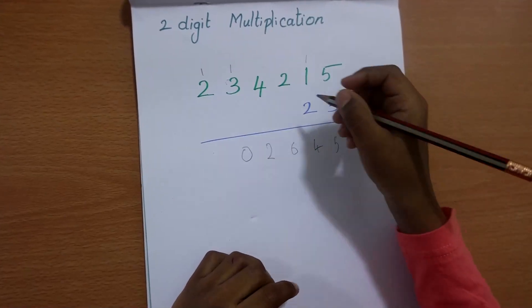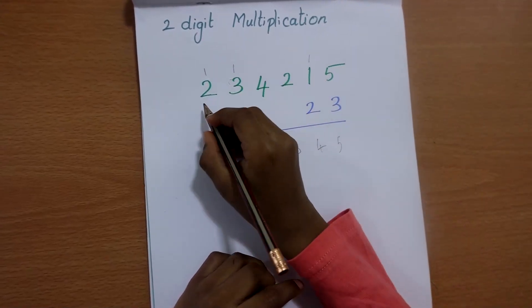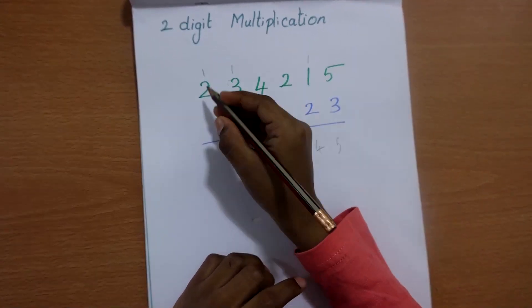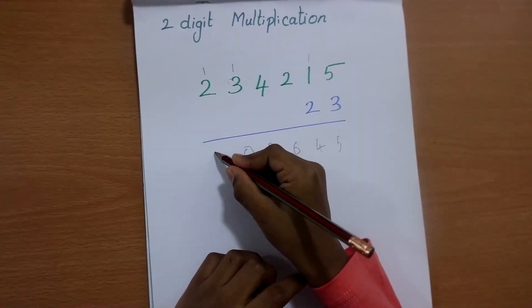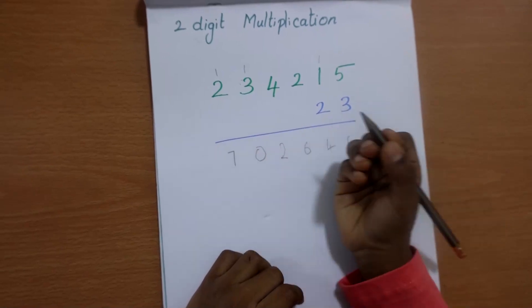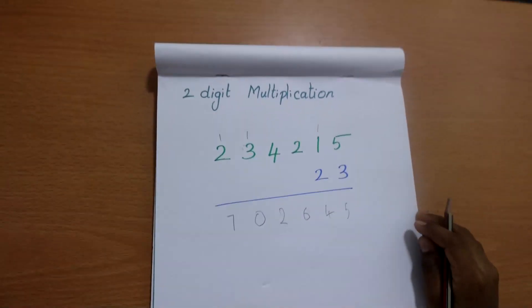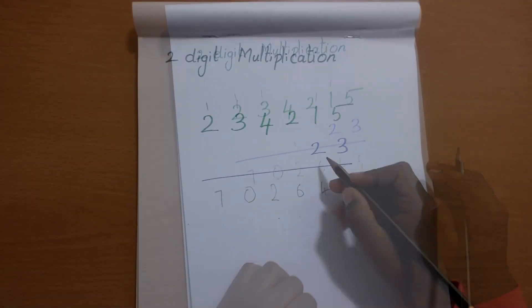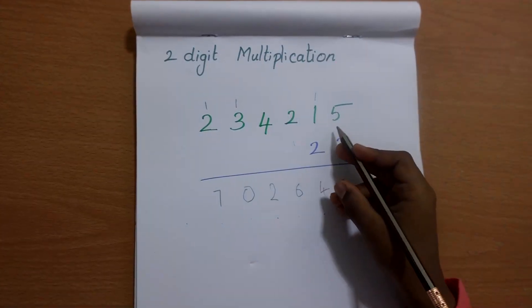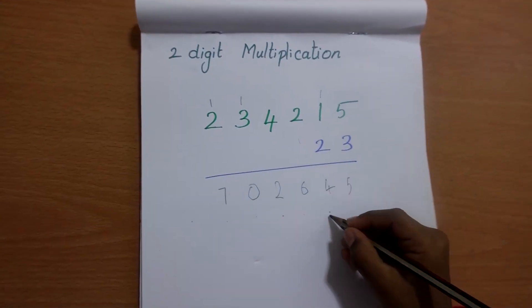3 times of 2 is 6, 7 actually. 2 times of 5 is 10.